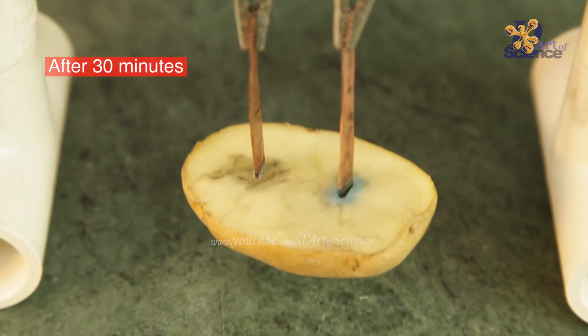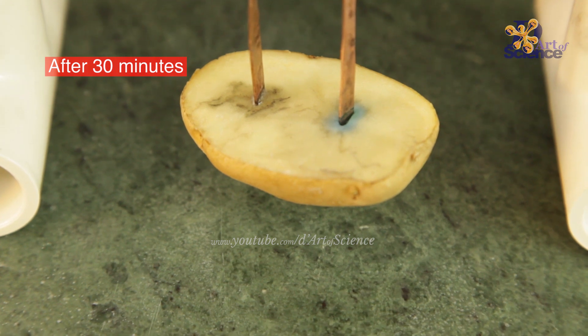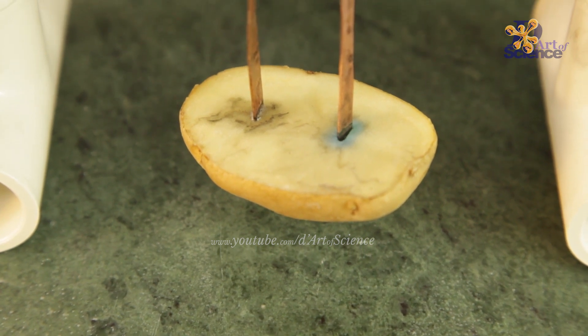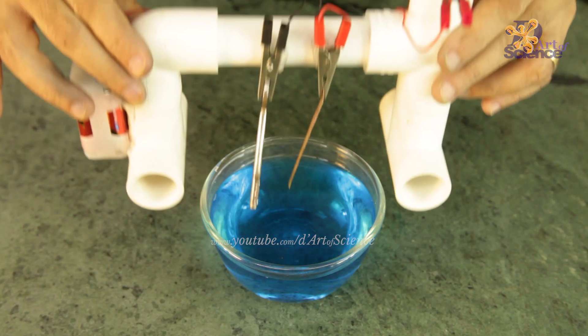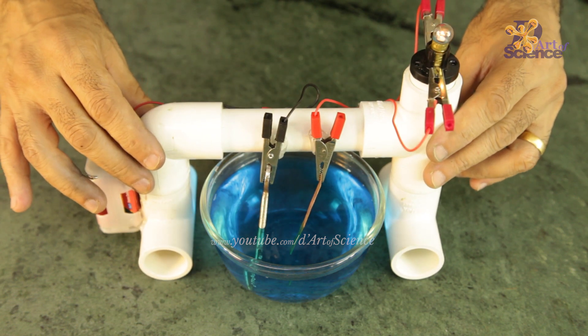We can see the colour changing around the anode. This change of colour happened on the anode because some material from the anode starts leaving it, and in a perfectly conducting solution, it will get deposited on the cathode.